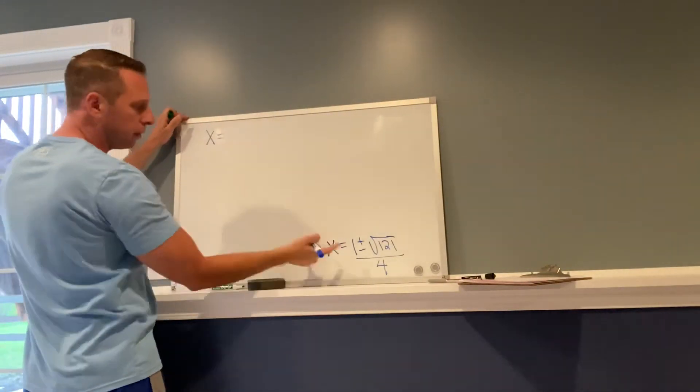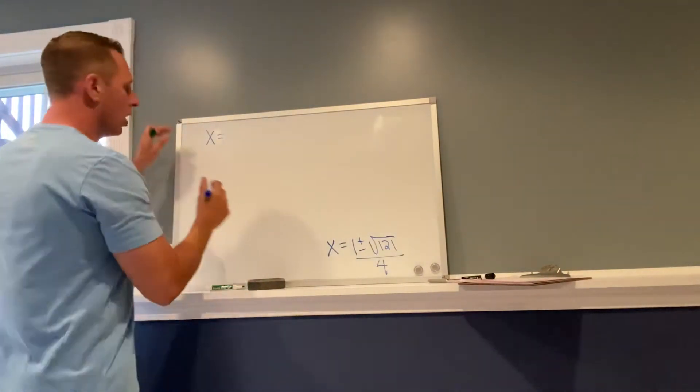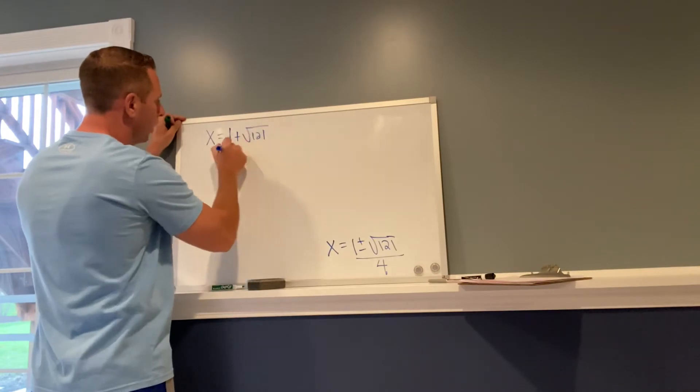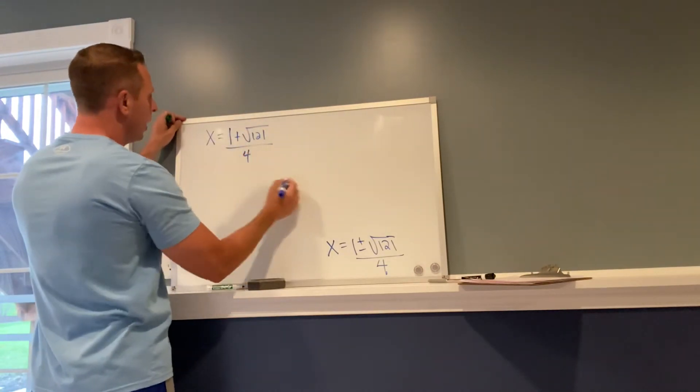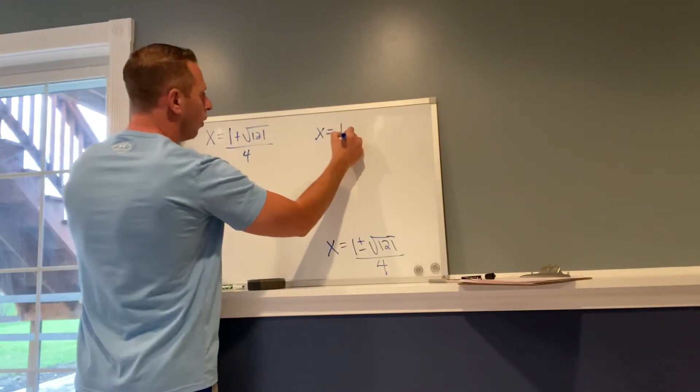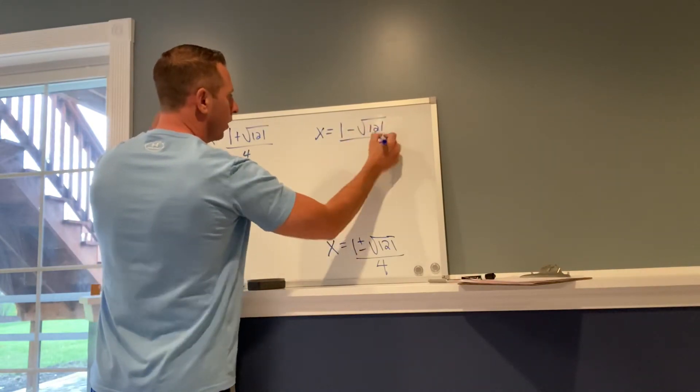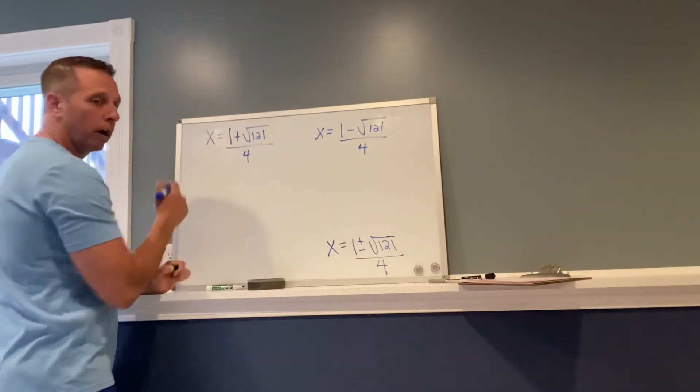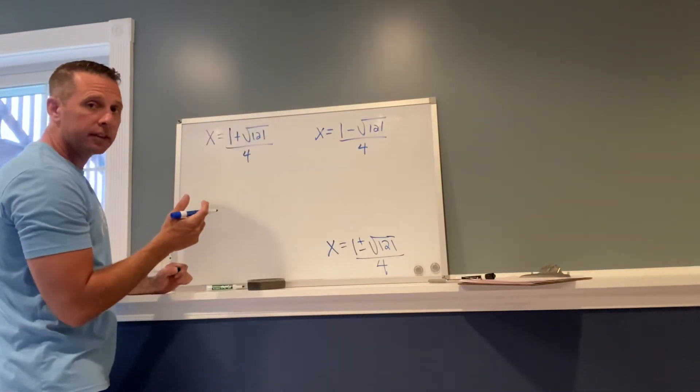All this plus and minus means is we have two separate equations. We got x equals 1 plus the square root of 121 over 4, and we got x equals 1 minus the square root of 121 over 4. Square root of 121 is 11.